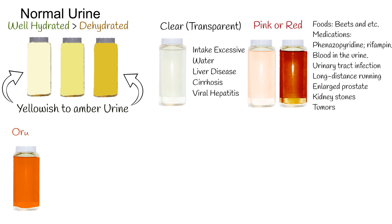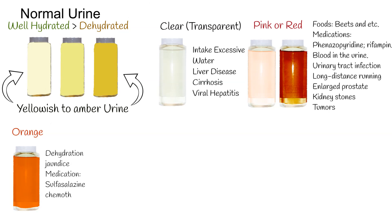Orange urine. The most common cause of orange urine is dehydration. Jaundice can also cause orange urine. Some medications can also cause orange urine, like sulfasalazine and some chemotherapy drugs.